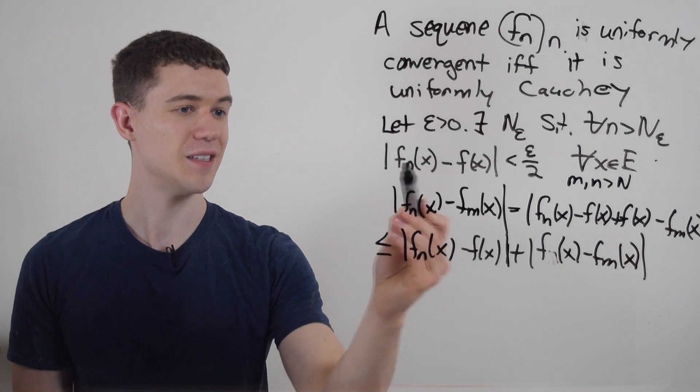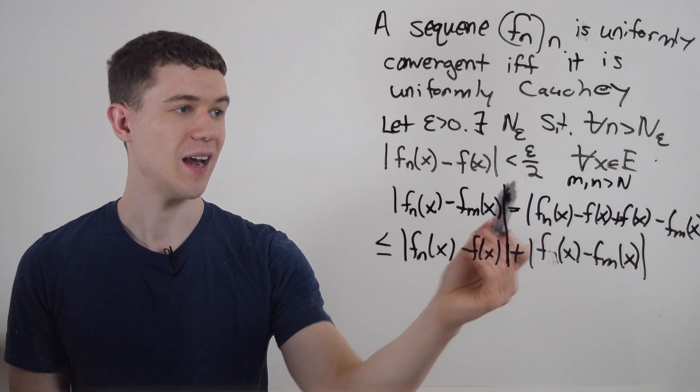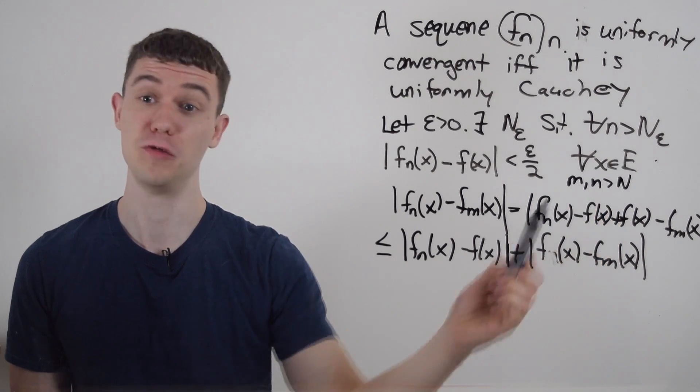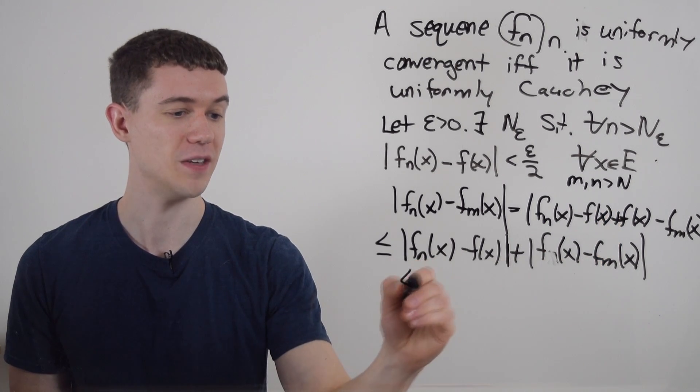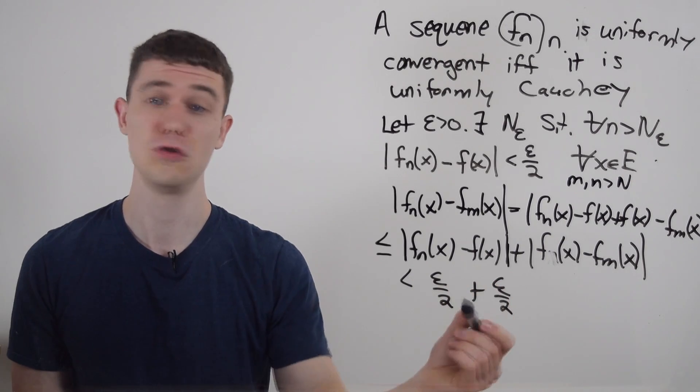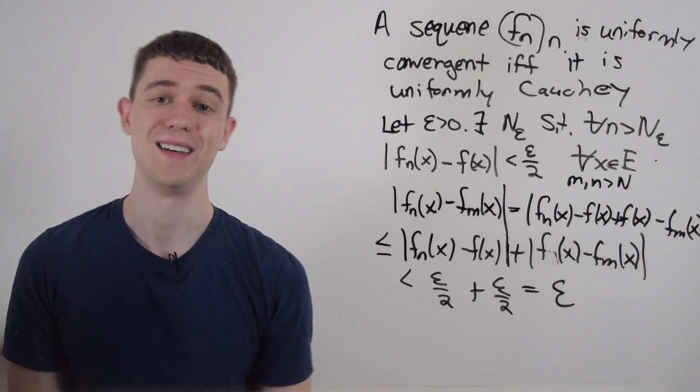And hey, because of this fact here, as long as n, or in this case m as well, is bigger than capital N, which it is, I can bound both of these by epsilon over 2. And epsilon over 2 plus epsilon over 2 is epsilon.